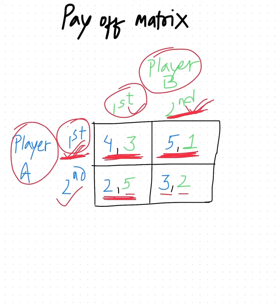In the case of 2, 5, this is the result when Player A selects the second strategy and Player B selects the first strategy.